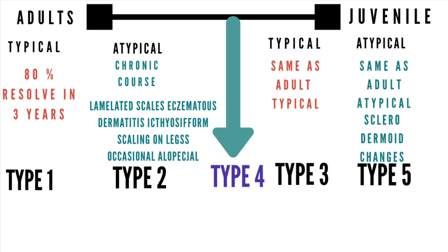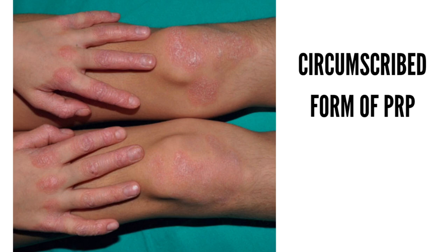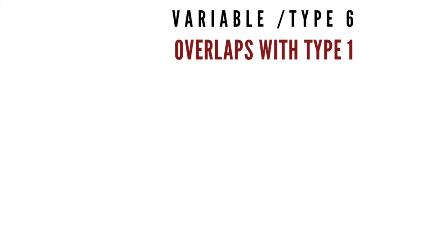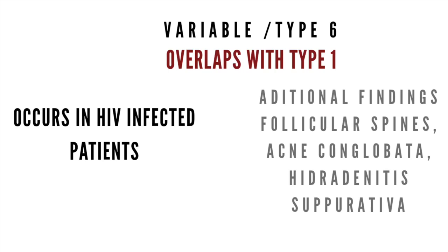Now, where did Type 4 go? Type 4 is also a juvenile form — the circumscribed juvenile form — characterized by follicular hyperkeratotic papules on the elbows and knees, with a variable course. This is the most common form in children. The variable form, Type 6, can occur at any age, is associated with HIV infection, its clinical features overlap with Type 1, and additional findings include follicular spines, acne conglobata, and hidradenitis suppurativa.